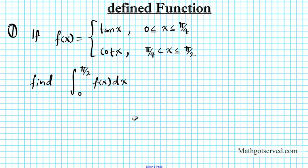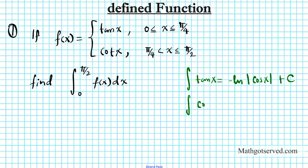Before we start integrating, there are two formulas for integration we need to know. The first one is the antiderivative of tan x, which is negative the natural logarithm of the absolute value of cosine x plus c. And the integral of cot x dx equals the natural logarithm of the absolute value of sin x plus c.